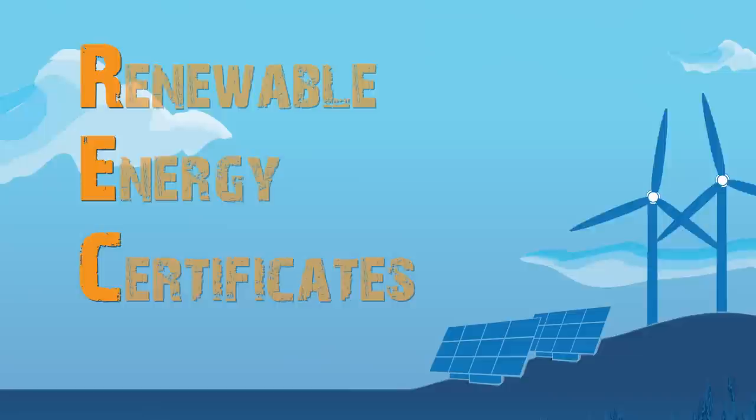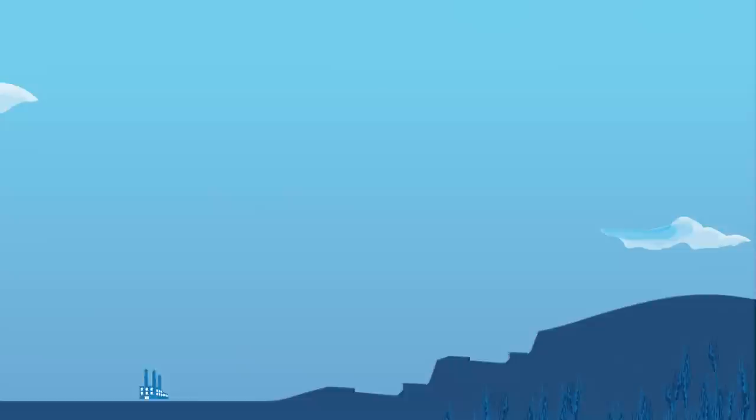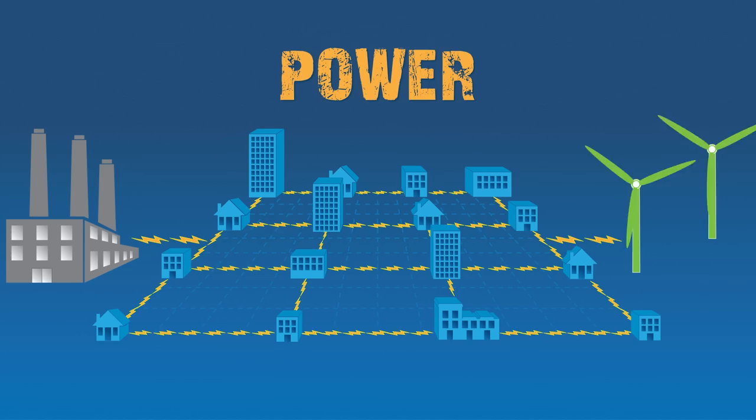To understand how RECs work, it helps to understand how electricity is generated and delivered. From fossil fuel based power plants to wind farms, every power generator produces electricity. This electricity travels to you through a network of transmission and distribution wires, which we call the electric power grid. Electricity from many different sources mixes together in the grid.